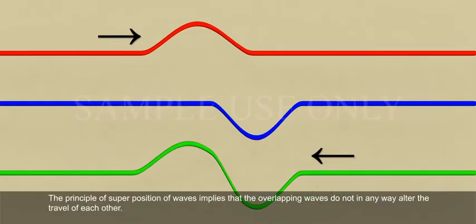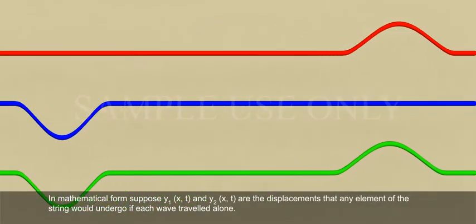The Principle of Superposition of Waves implies that the overlapping waves do not in any way alter the travel of each other. In mathematical form,